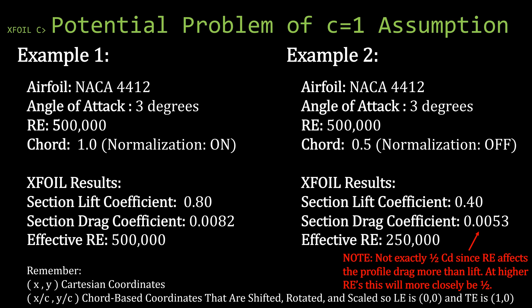So for the second example, if we were looking to find the section lift coefficient of the NACA 4412 at three degrees angle of attack at a Reynolds number of 500,000 but used a non-normalized chord of only 0.5, the resulting section lift coefficient of 0.4 would be incorrect.